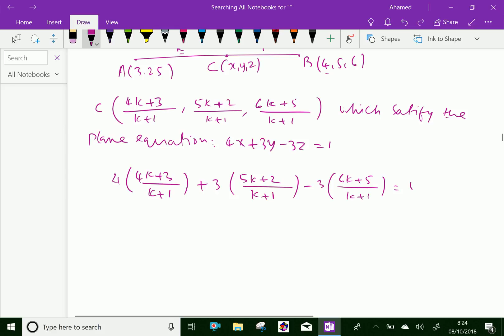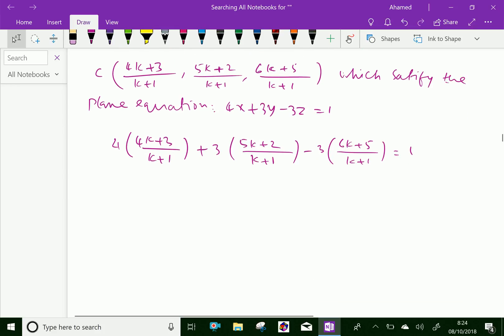Now, let us simplify. By simplification, it is (16k+12)/(k+1) plus (15k+6)/(k+1) minus (18k+15)/(k+1) equal to 1 into (k+1) is k+1. After simplifying, we get k+1 is common denominator.